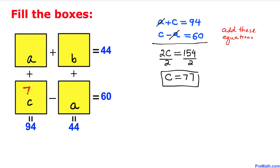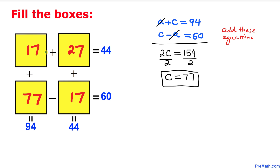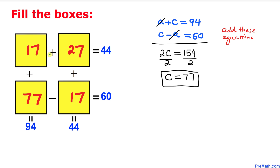So box C has the value 77. That means the next box must be 17, because 77 minus 17 equals 60. Since box A and box D have the same value, if one is 17, the other is 17 as well. Finally, the remaining box must be 27, because 17 plus 27 equals 44. So the values in our boxes are 17, 27, 17, and 77, and adding or subtracting these values gives us 44, 60, 44, and 94.